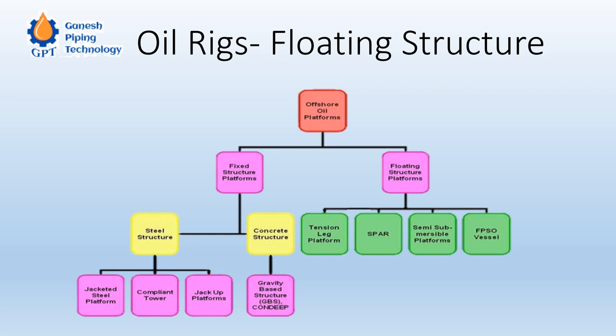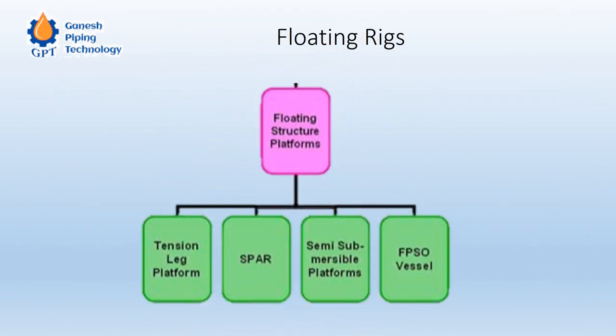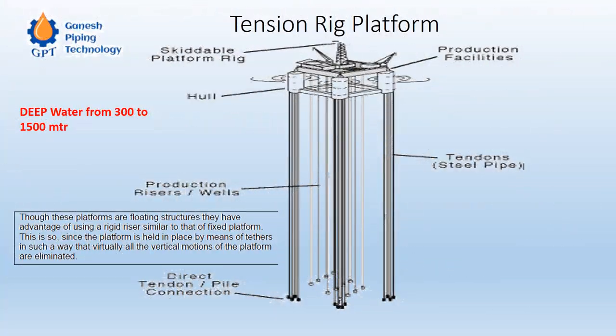The tension leg platform constitutes topside facilities which include a drilling derrick, a crane, and all the process and production facilities that are present in all types of platforms. The difference is only in the way it is mounted or connected to the seabed, or how it is positioned at a certain location in the waters.